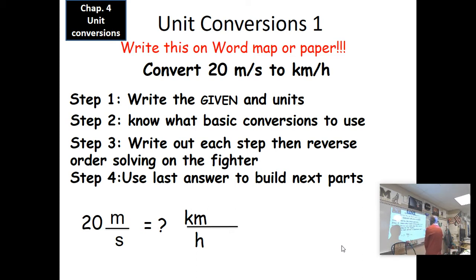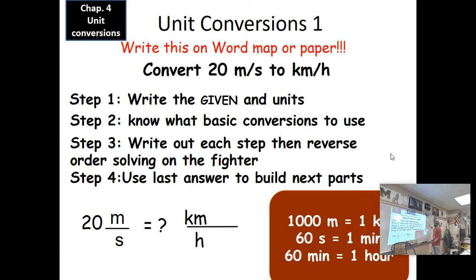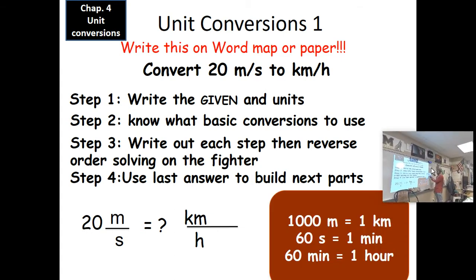So in this particular example here, it says first step is to write the given units. I'm going to try to convert from 20 meters per second to kilometers per hour. We're going to write out each step then we're going to reverse it on the TIE fighter. The TIE fighter is of course that little fraction set up that I have here. There are some units that you'll need to know like for instance the term kilo means 1,000, so there are 1,000 meters in a kilometer. There are 60 seconds in one minute and there are 60 minutes in one hour. Some of these are just simple conversions that you already know.